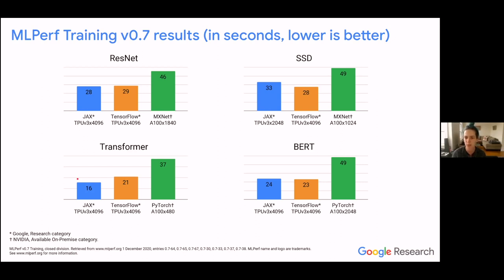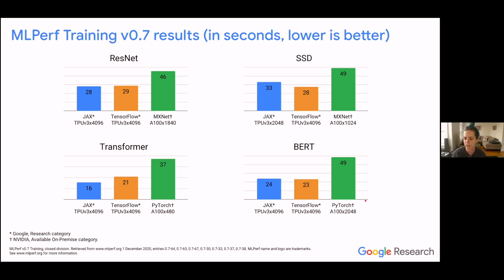One thing to note is that we're not comparing equal numbers of chips in every column. For example, in the BERT section, JAX is running on about 4,000 chips and PyTorch is running on about 2,000 A100s. We're comparing the largest and fastest submissions from each platform. The specialized high-speed interconnects allow TPU submissions to scale usefully to more chips, and the XLA compiler lets us squeeze as much performance as possible out of each chip, even though the TPU V3 was released about two years before the A100.